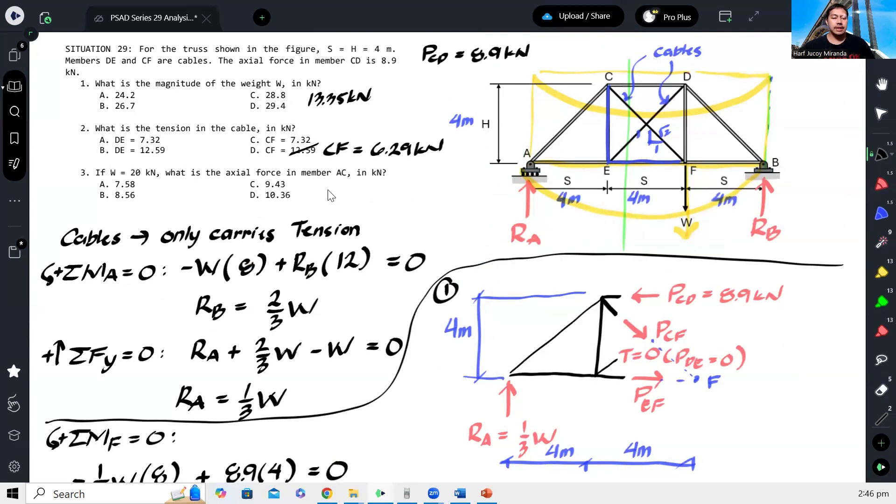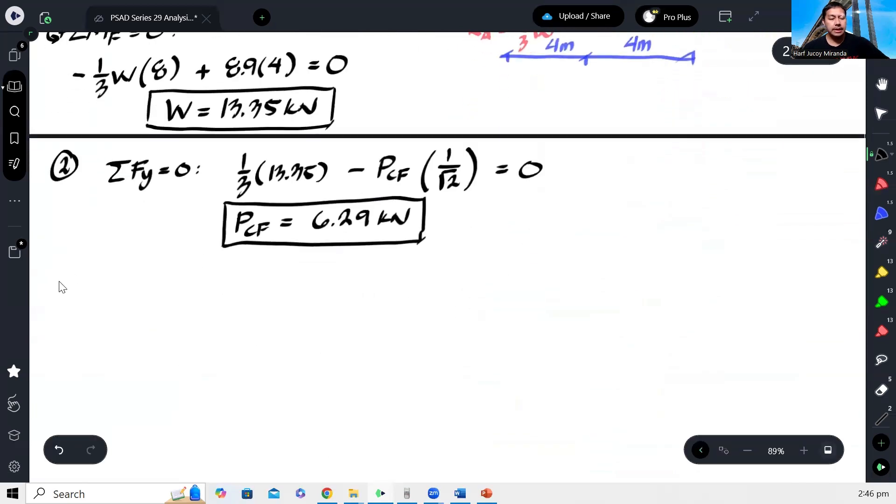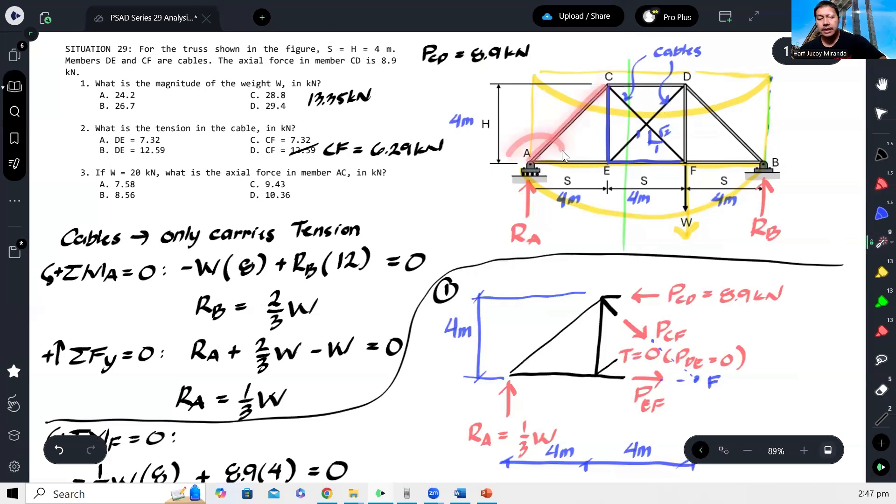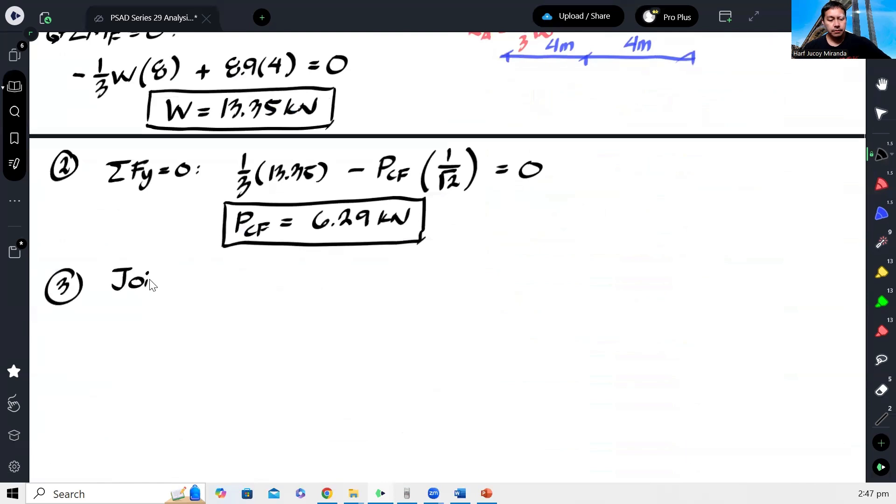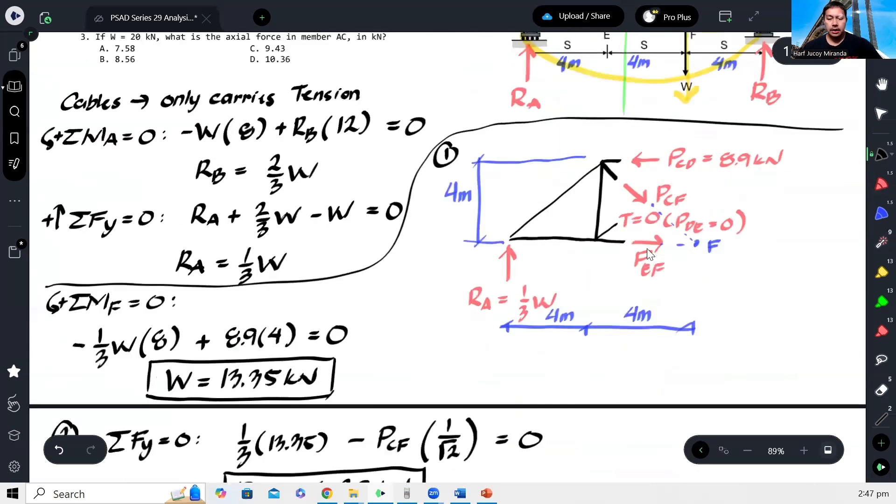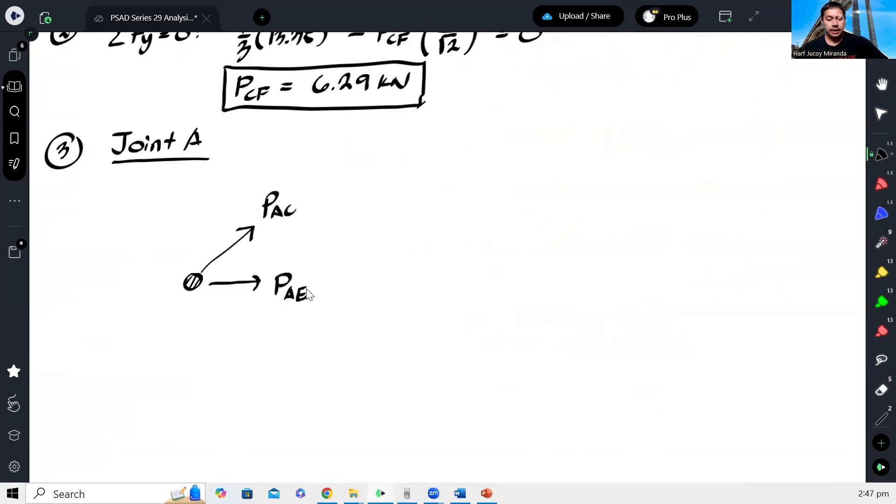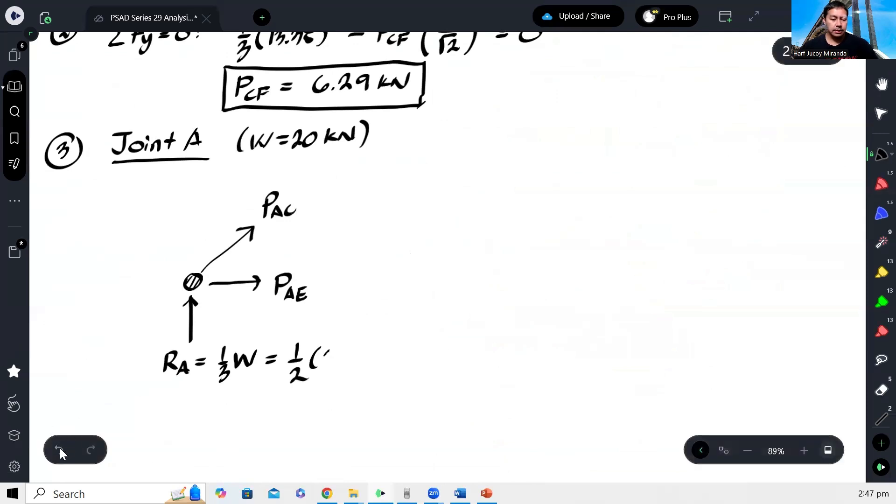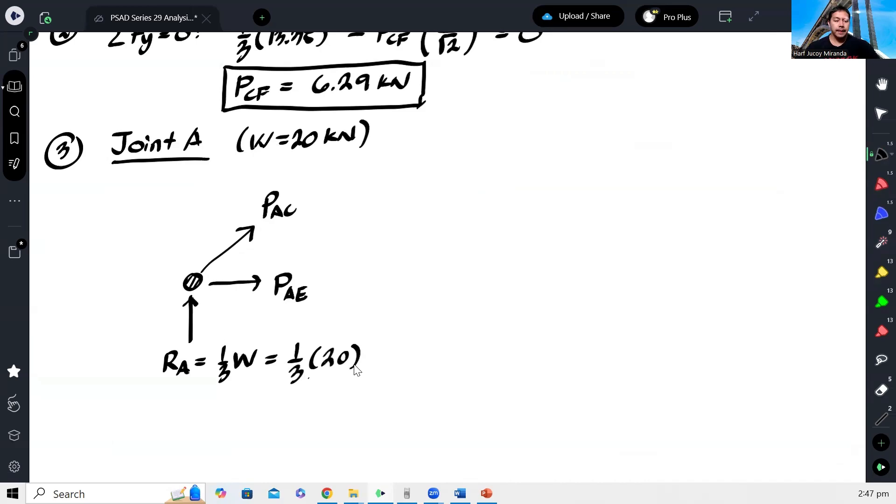Lastly, if W is 20 kN, what is the actual force in member AC? For number 3, we can use method of joint at point A. This is joint A with force AC and force AE, and reaction 1/3 of W. But for this item, W is 20. So this is 1/3 of 20.